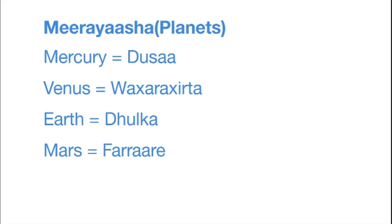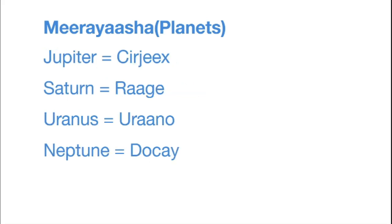Planets are Marayasha. Now let's go with the terrestrial planets. Mercury is dosa. Venus is wahra hirta. Earth is dhulka. And Mars is ferrare — not ferrari, ferrare.